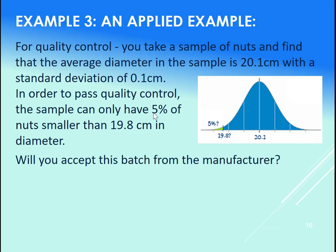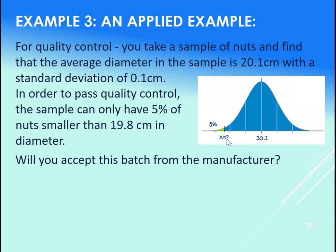Now, how should we analyze this? Will you accept this batch? One way of thinking about it is to say, let's go find the x value such that with this sample results, 5% of the nuts will be smaller than that based off of our sample. We would use norm.inv for that. We have the area, we're looking for the x value.